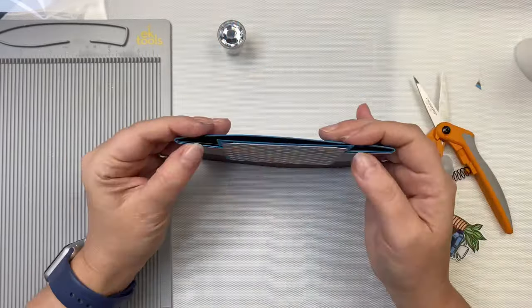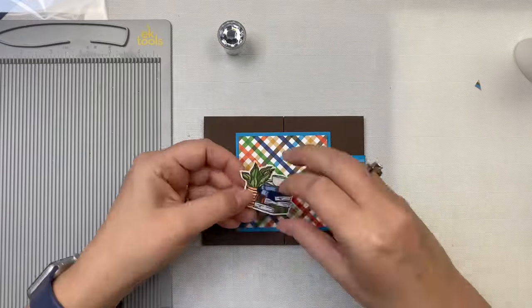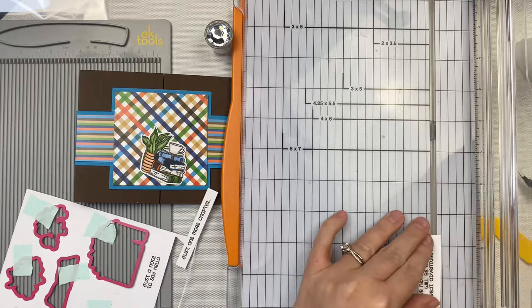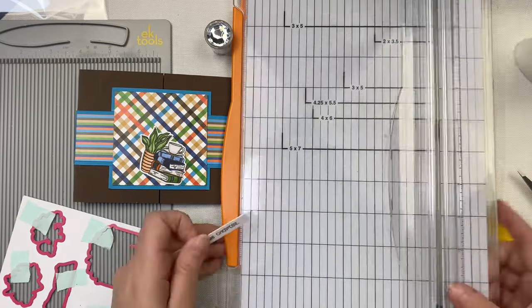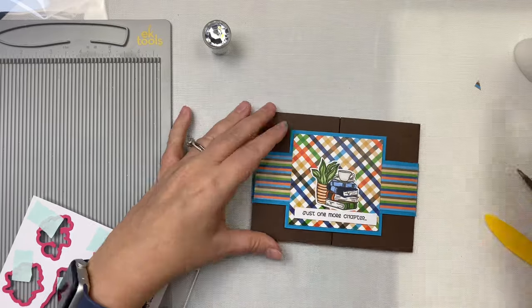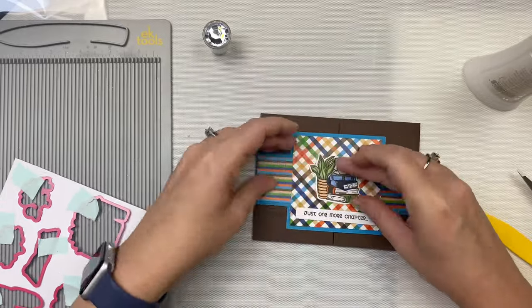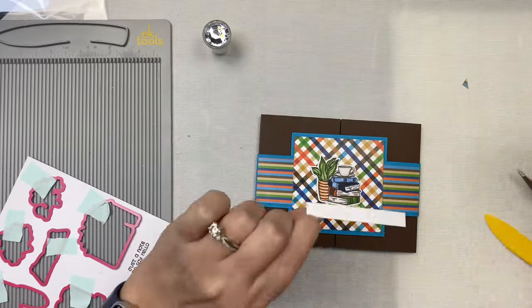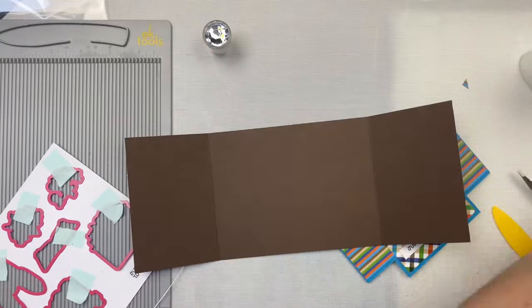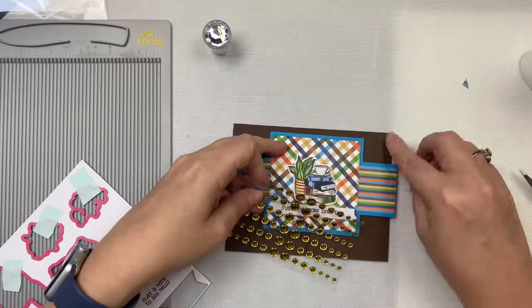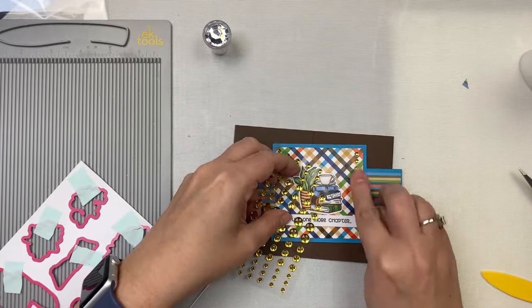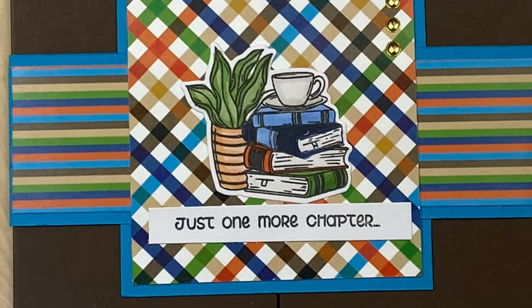For the image, I'm using the stack of books with the coffee cup on top. I cut the sentiment into a strip to go below that, that says 'just one more chapter.' To finish off the card, I added three gold enamel dots to the top right hand corner. I did this on the square instead of putting it on the card base because I want the belly band to be able to slide freely without getting caught on anything. This finishes up card number two using sketch four.